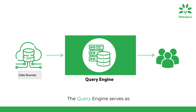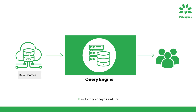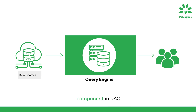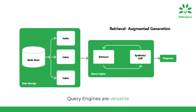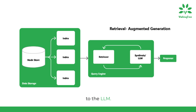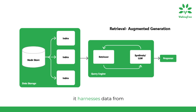The query engine serves as a comprehensive pipeline, allowing users to ask questions about their data. It not only accepts natural language queries but also retrieves and passes along reference context to the LLM, making it a powerful component in RAG. Query engines are versatile — designed to accept natural language queries, provide responses, and relay reference context to the LLM. Composed using different combinations, it harnesses data from various sources, each delivering distinct behaviors and results.